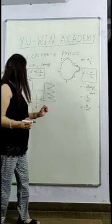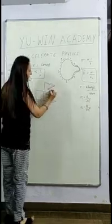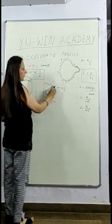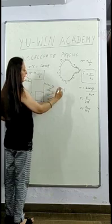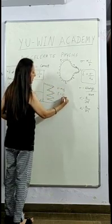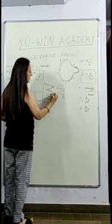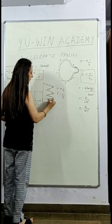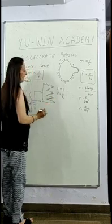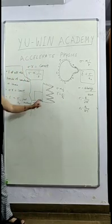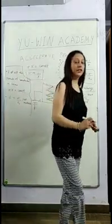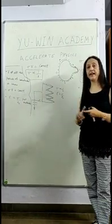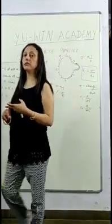At the pointed ends, because sigma is inversely proportional to R, sigma will be very high since the radius of curvature is negligibly small. Since E = sigma/ε₀, the field just outside this comb-shaped conductor is going to be very high. When the field just outside the conductor becomes very high, the dielectric breakdown of the surrounding air will take place. Air in normal conditions is an insulator, but in extreme conditions of high electric field, low pressure, or high temperature, the insulator becomes a conductor.